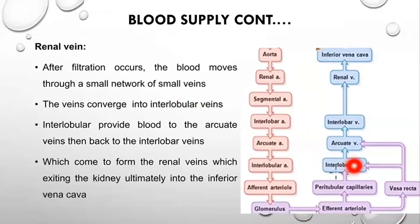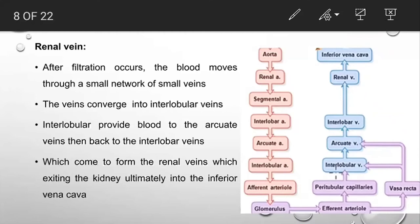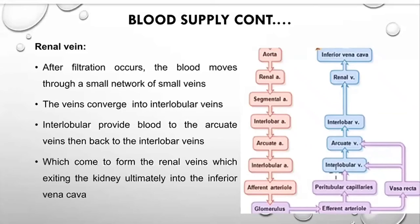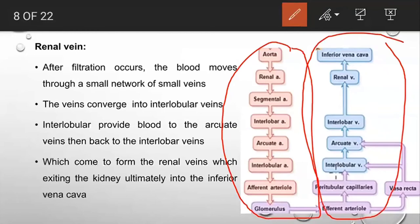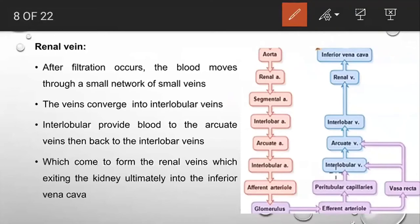After filtration, blood moves through a network of small veins: interlobular vein → arcuate vein → interlobar vein → renal vein → inferior vena cava. The renal artery supplies oxygenated blood to the kidney, while the renal vein carries deoxygenated blood from the kidney back to the heart for purification.